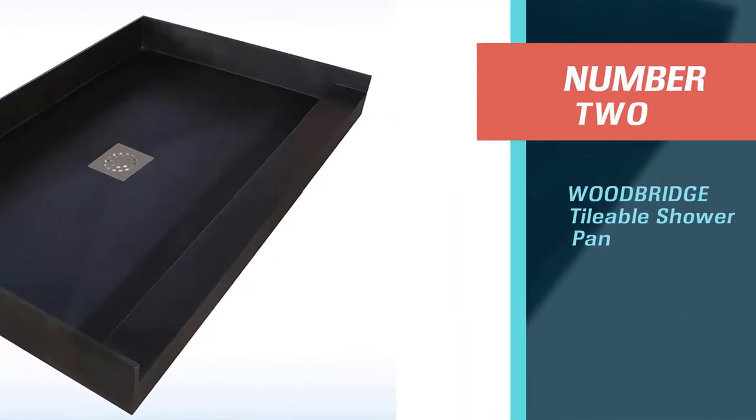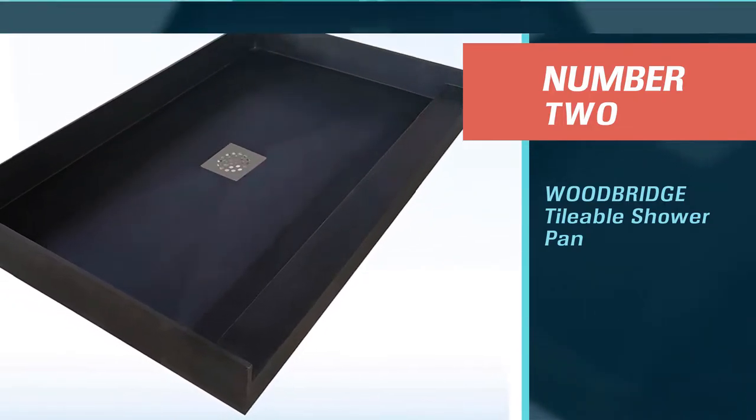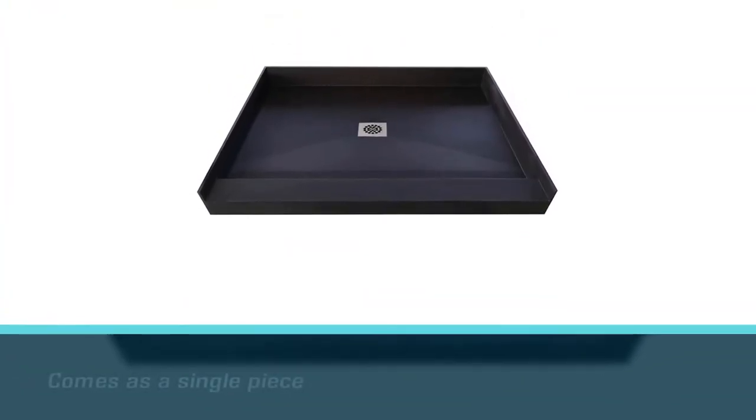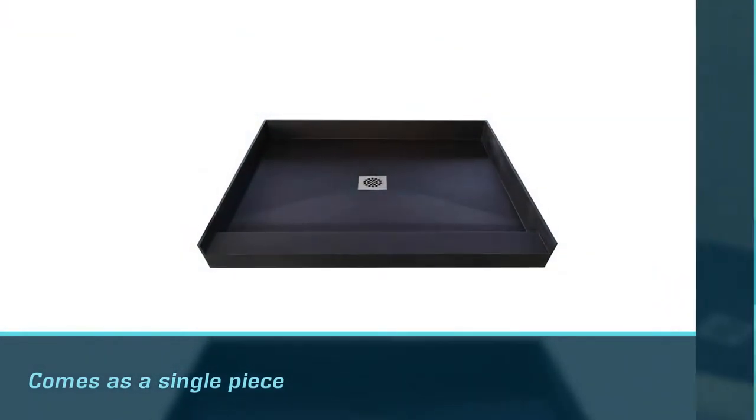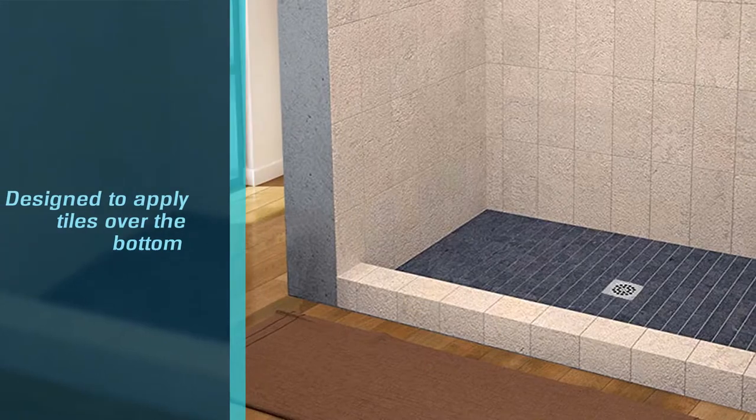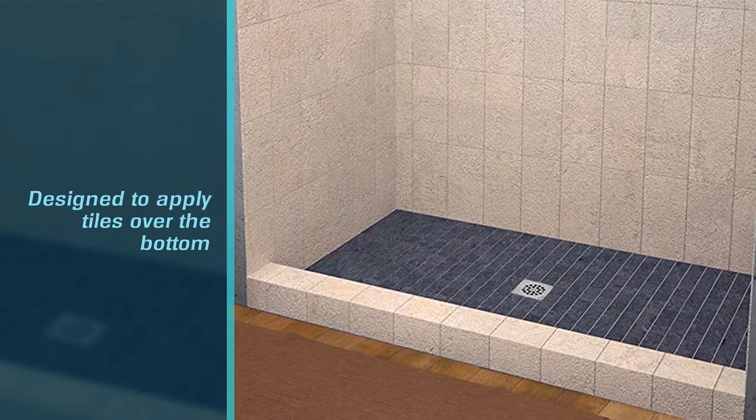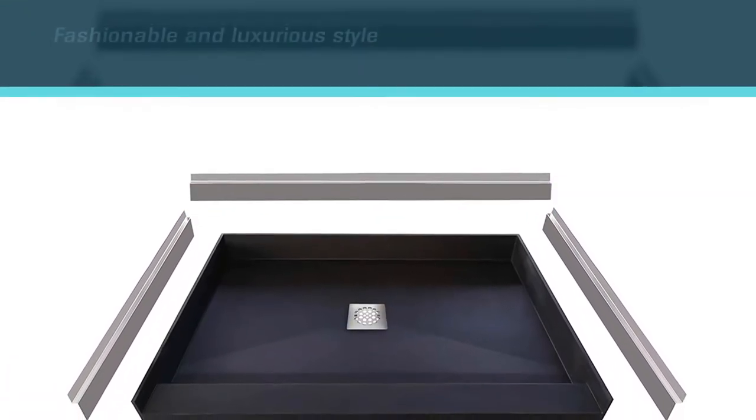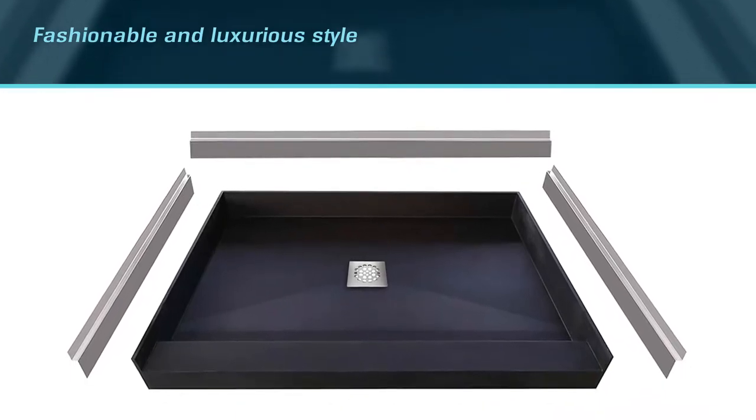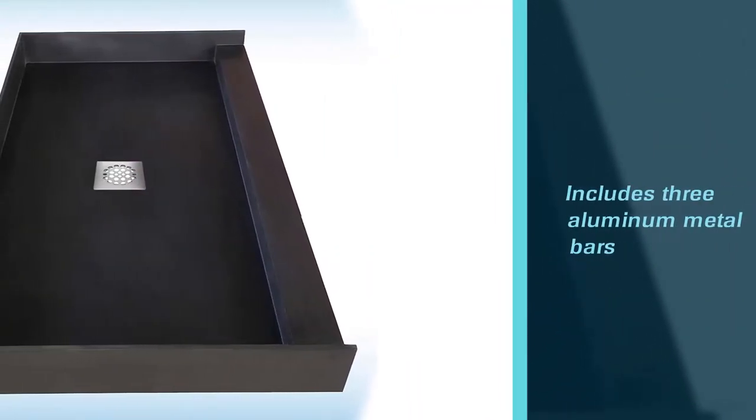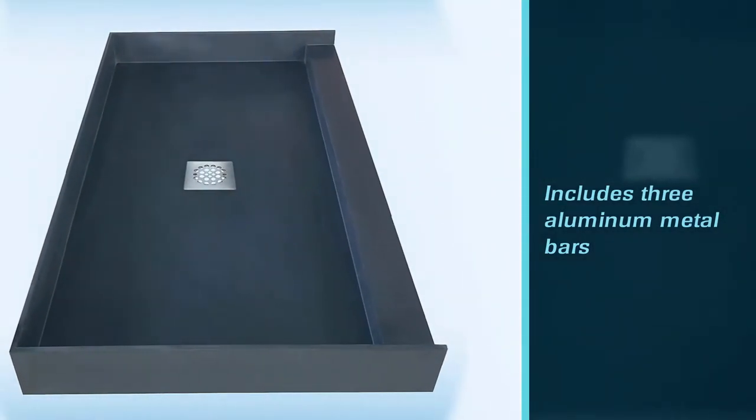Number two: Woodbridge Tileable Shower Pan. This shower pan comes as a single piece and in a kit ready to install. It's designed to apply tiles over the bottom of the pan for the most fashionable and luxurious tile. The kit includes three aluminum metal bars and 12 pounds of tile epoxy adhesive. This should be enough to tile the entire base surface, although different sizes are available.